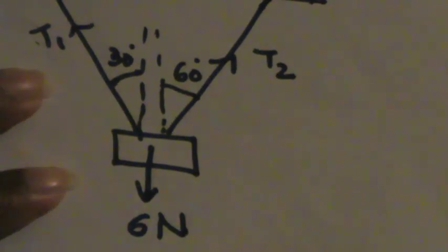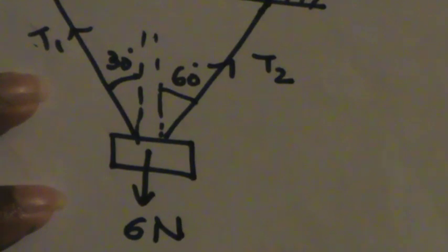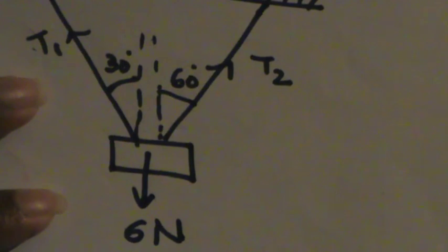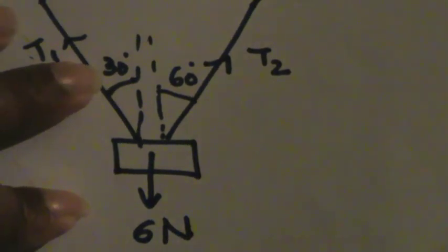There are actually three ways to find this solution. One way is by using the triangle law. But I will not find it using the triangle law. Another way is to decompose these forces along the horizontal and vertical directions, stating that this object is in equilibrium — if you hang it like this, the object will obviously be in equilibrium. But my actual intention is to explain Lamy's theorem, so I will solve this using Lamy's theorem.